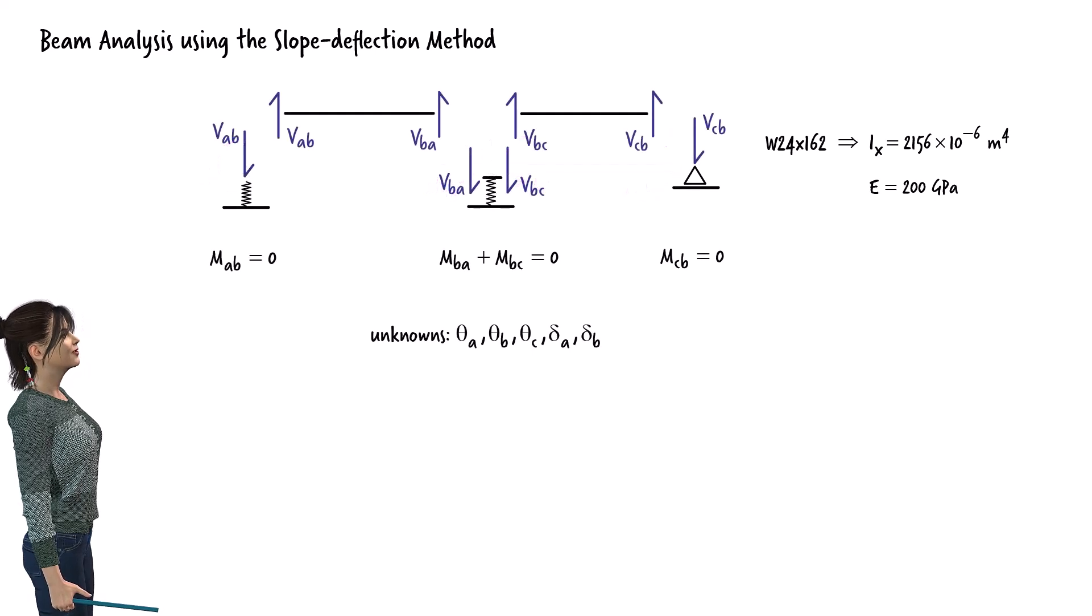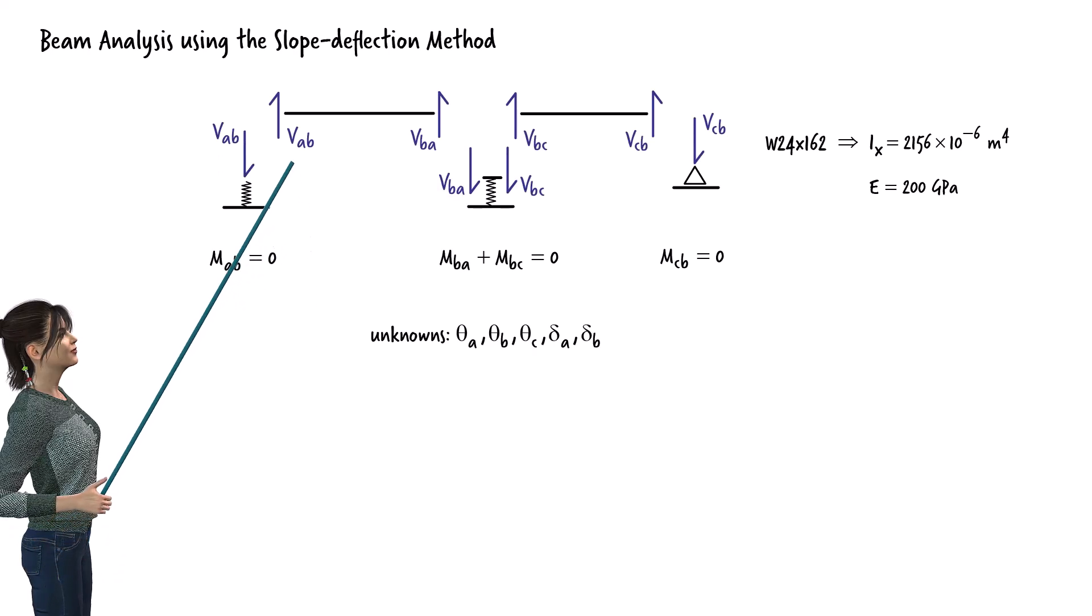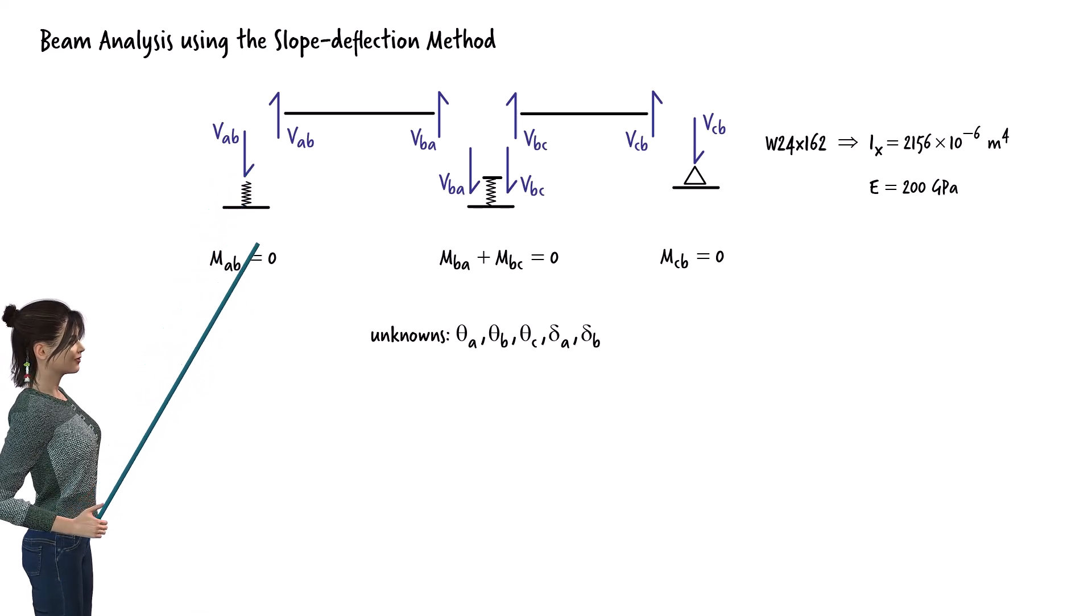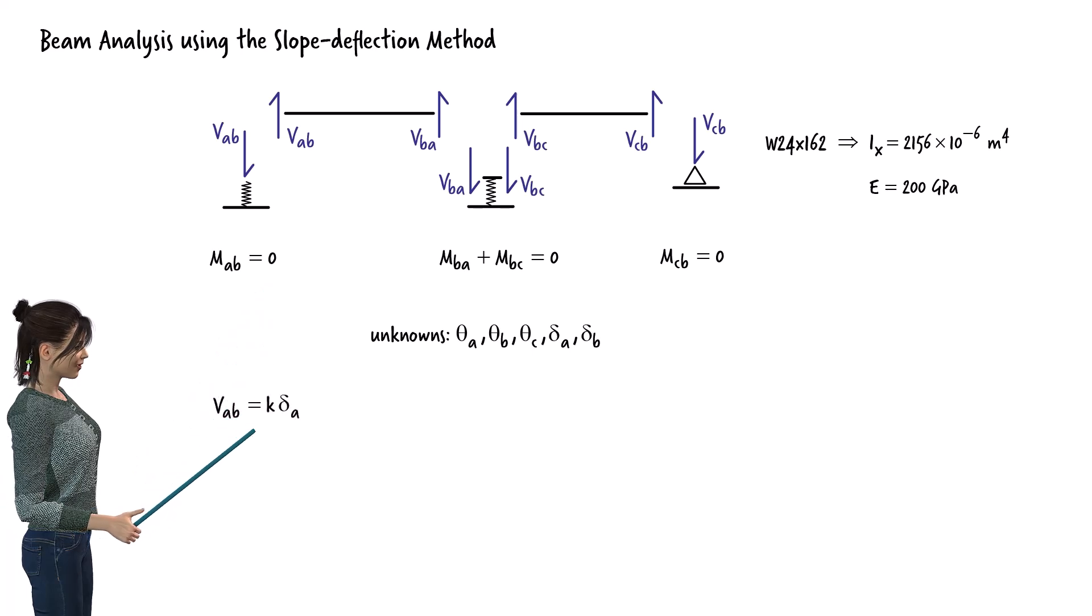We can use the member-end shear forces to get two more equations. The shear force at the left end of segment AB is equal to the force applied to the spring at support A. This force can be expressed as the product of the spring stiffness coefficient, K, and the spring deformation, delta A. This is our fourth equilibrium equation.